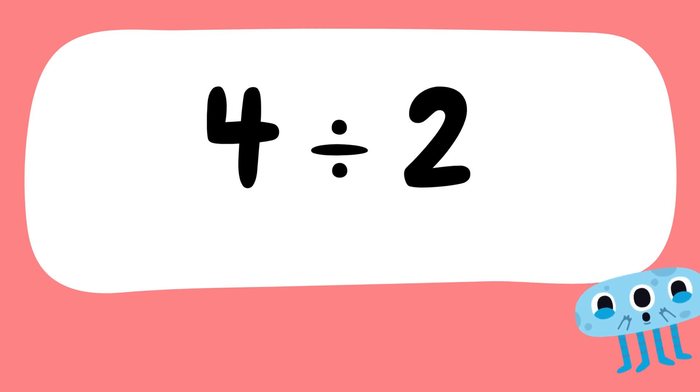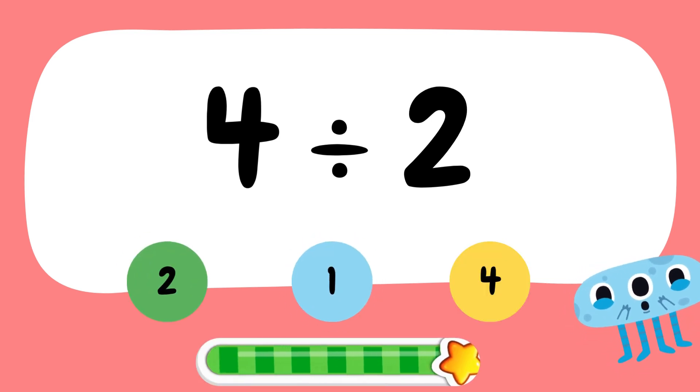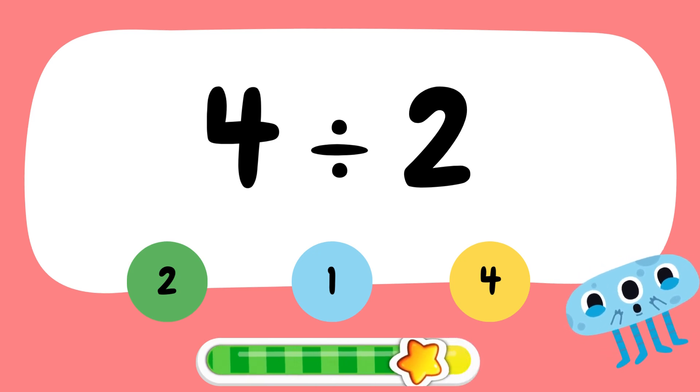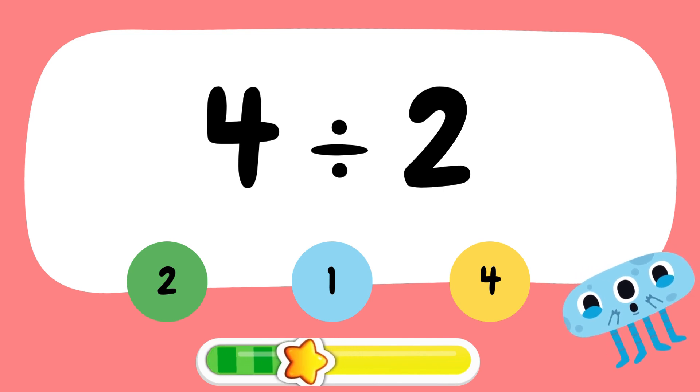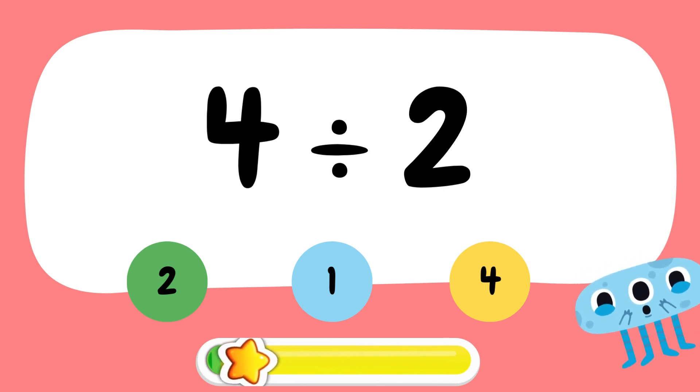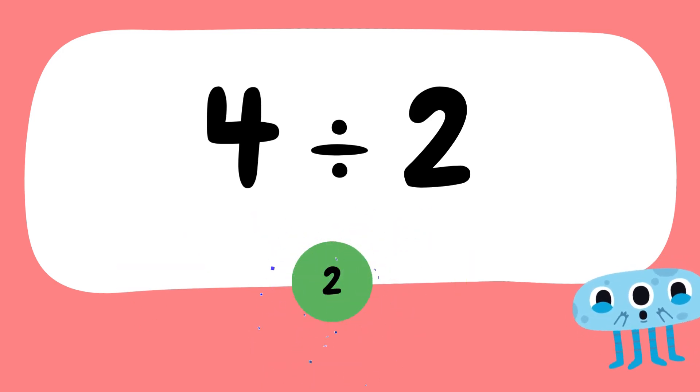What is 4 divided by 2? The right answer is 2. Well done if you got it right.